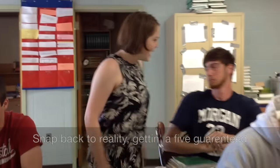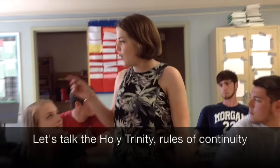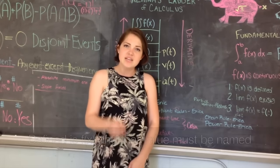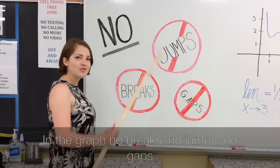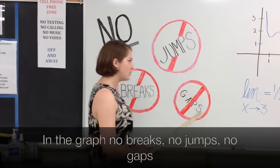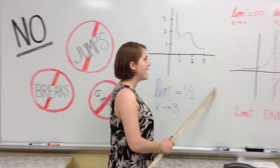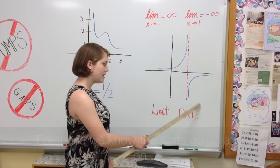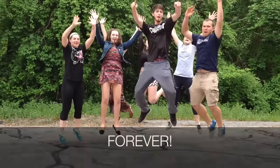Snap back to reality, getting a five guaranteed. Let's talk the holy trinity, rules of continuity. Left and the right hand limits remain the same. Defined as f of x and that value must be named in the graph. No breaks, no jumps, no gaps. The limit does exist and the function's all intact. But some limits can be strange and not exist in every place. But these we know the limits go on and on forever.